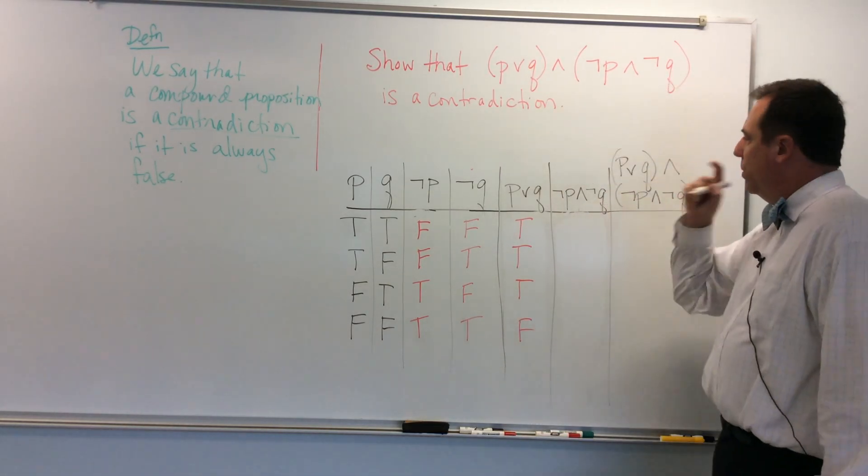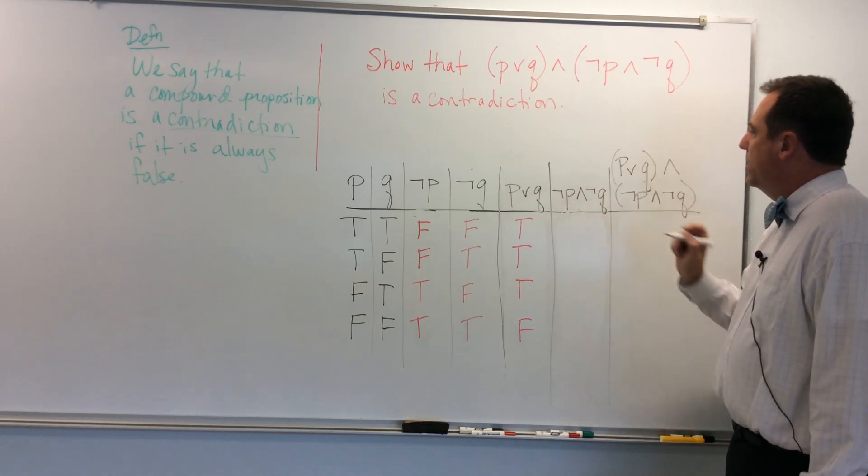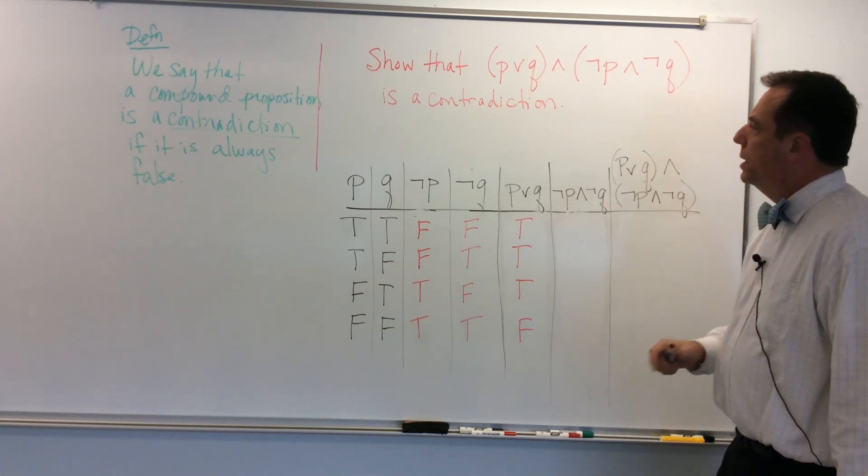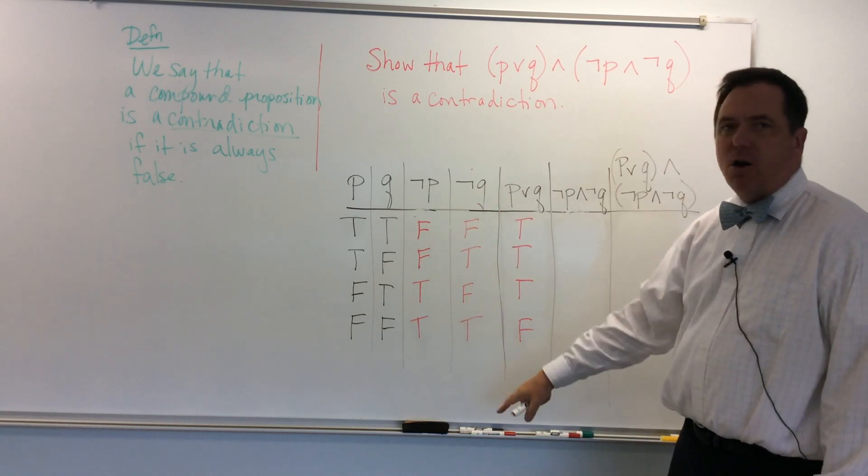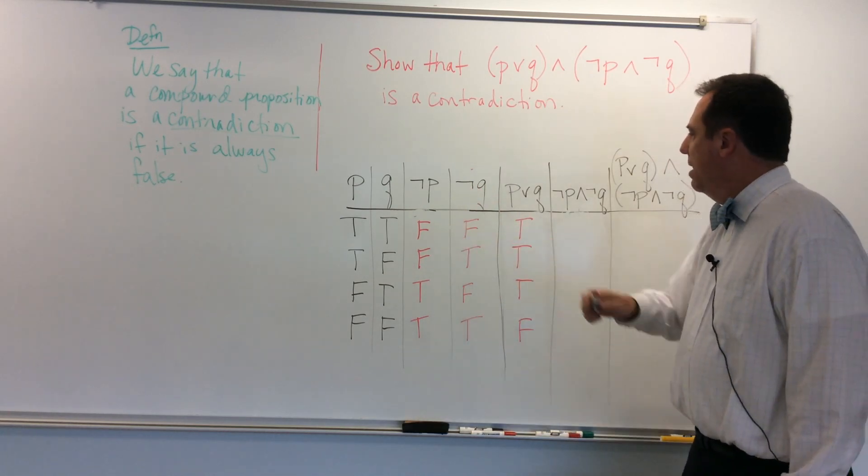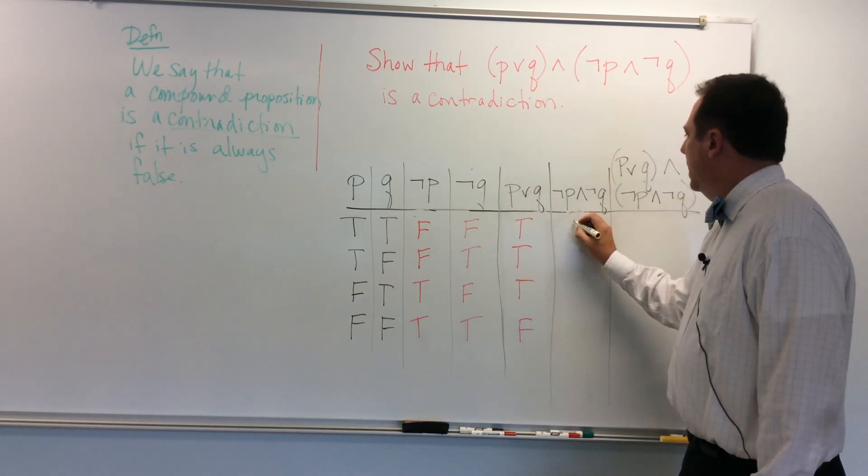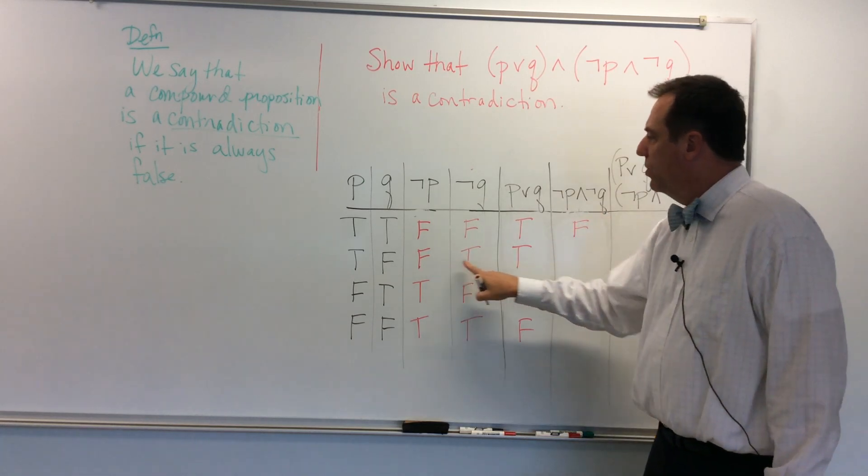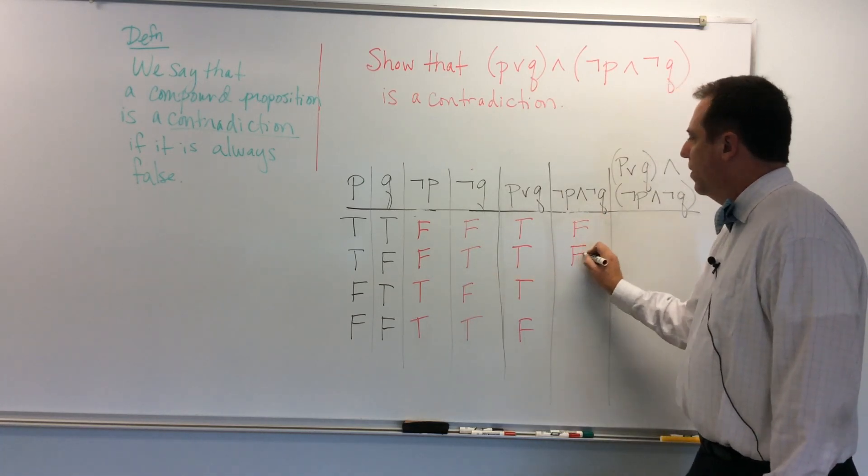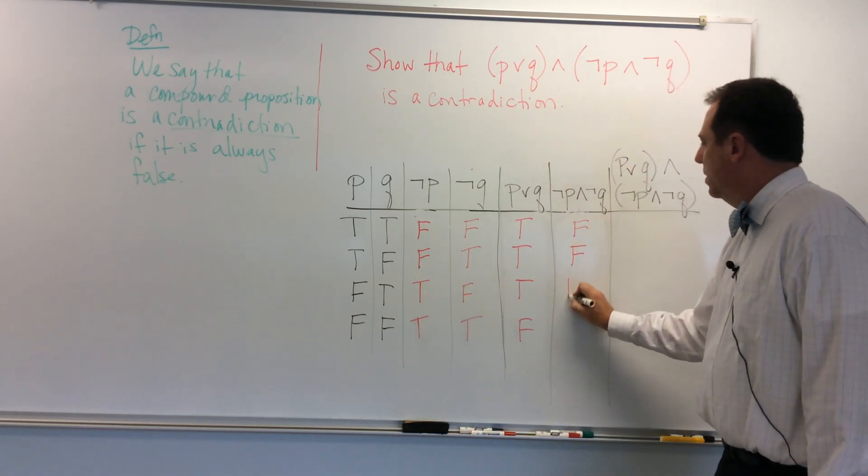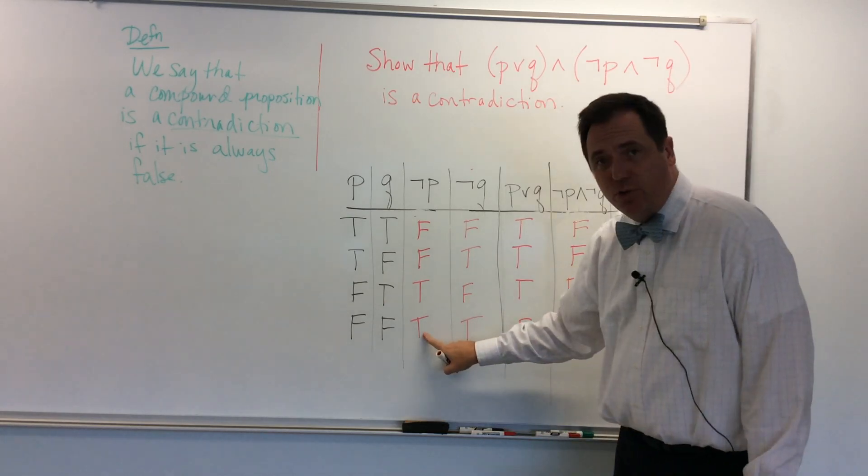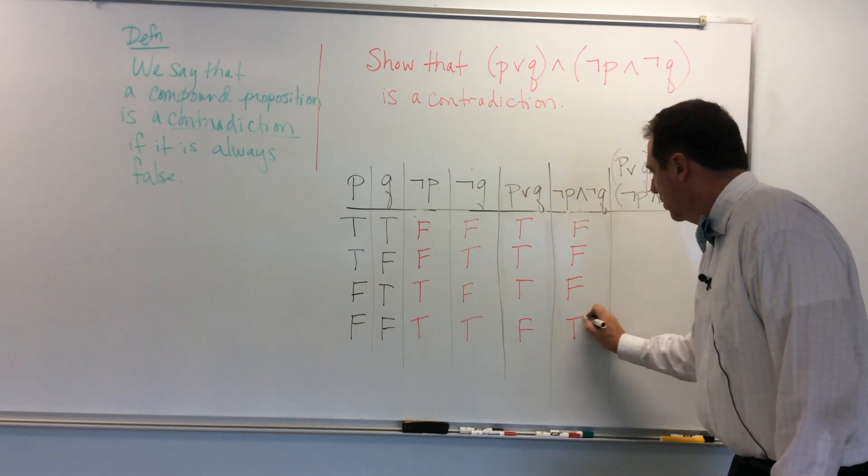Now, I'm going to do not P and not Q. So I'm going to go to the not P and not Q columns. False and false is false. False and true is false. True and false, again false. But true and true is always true.